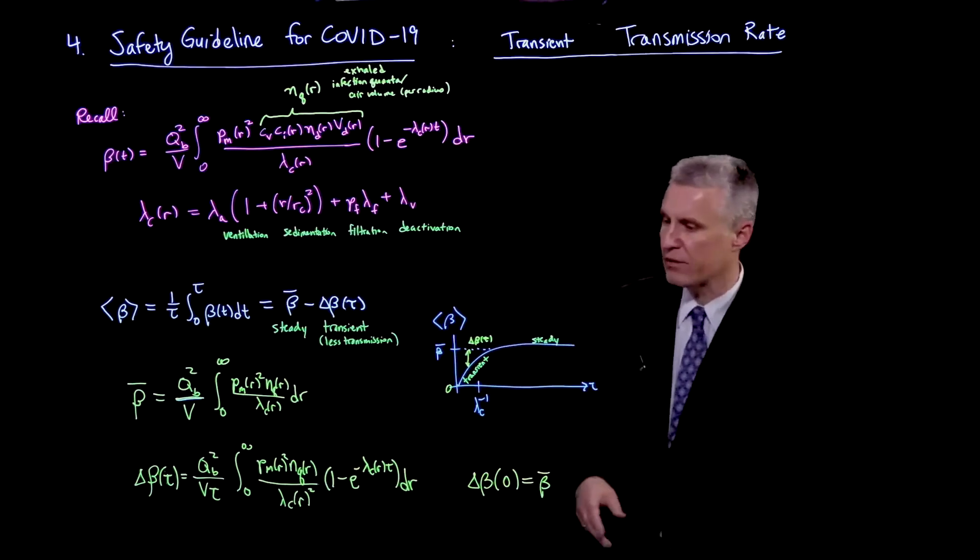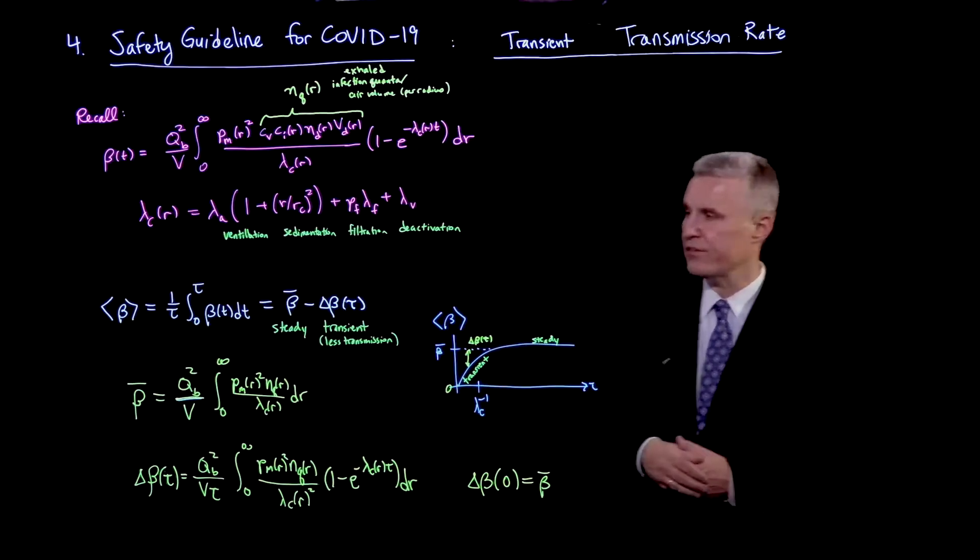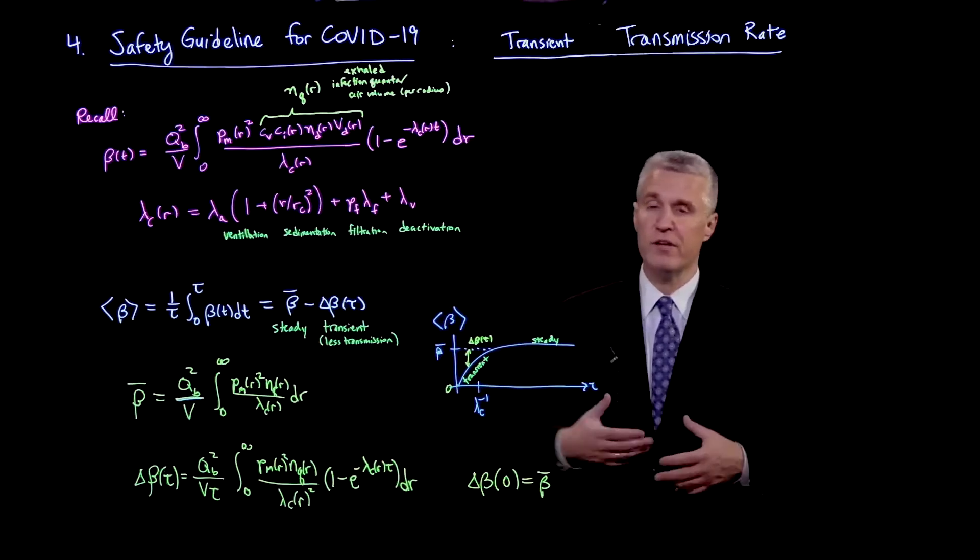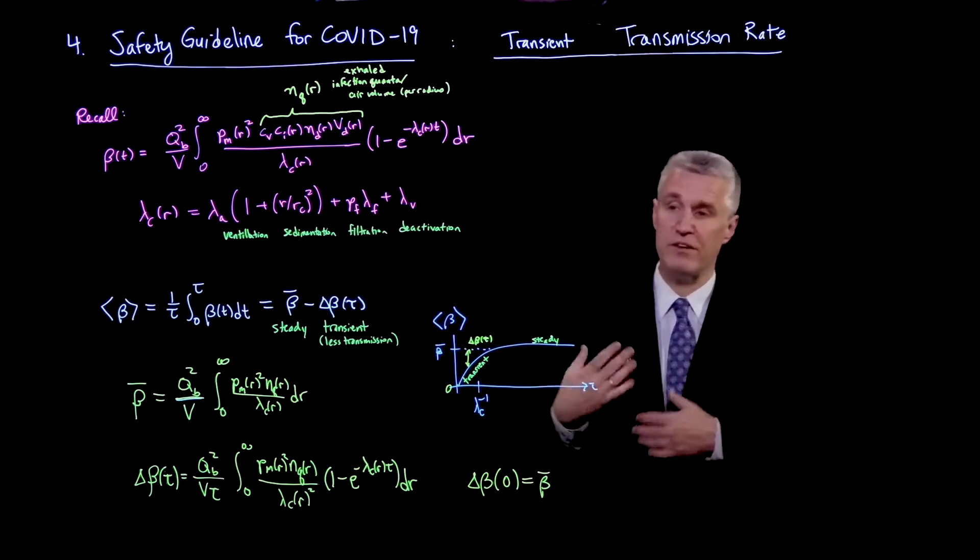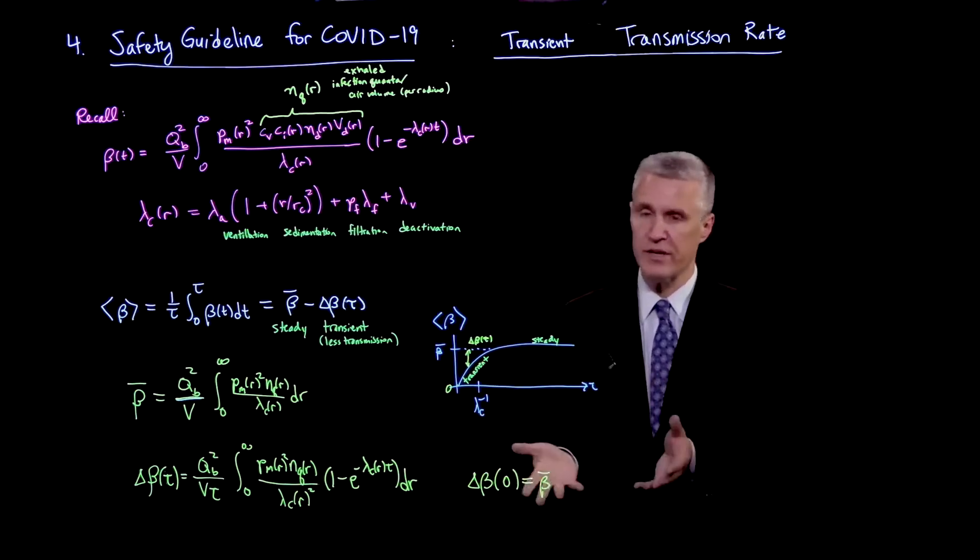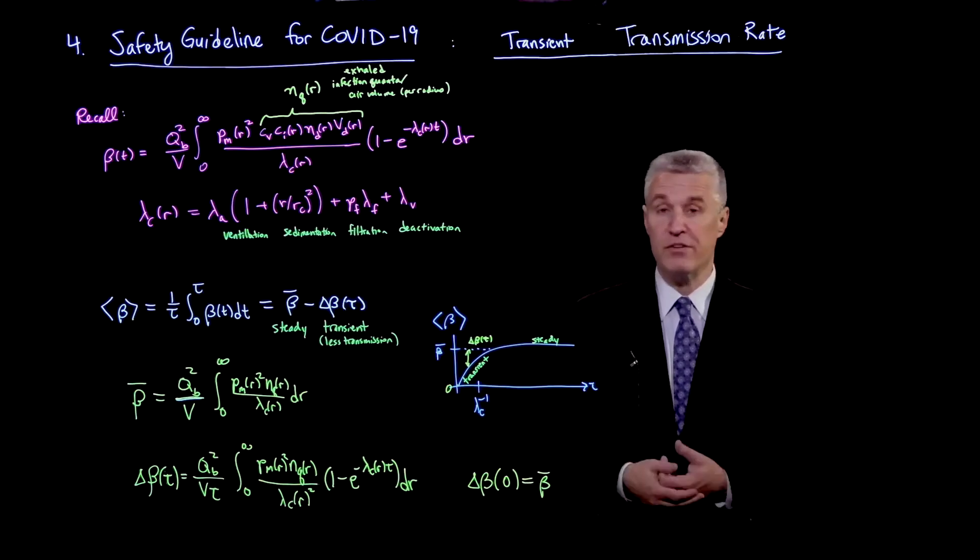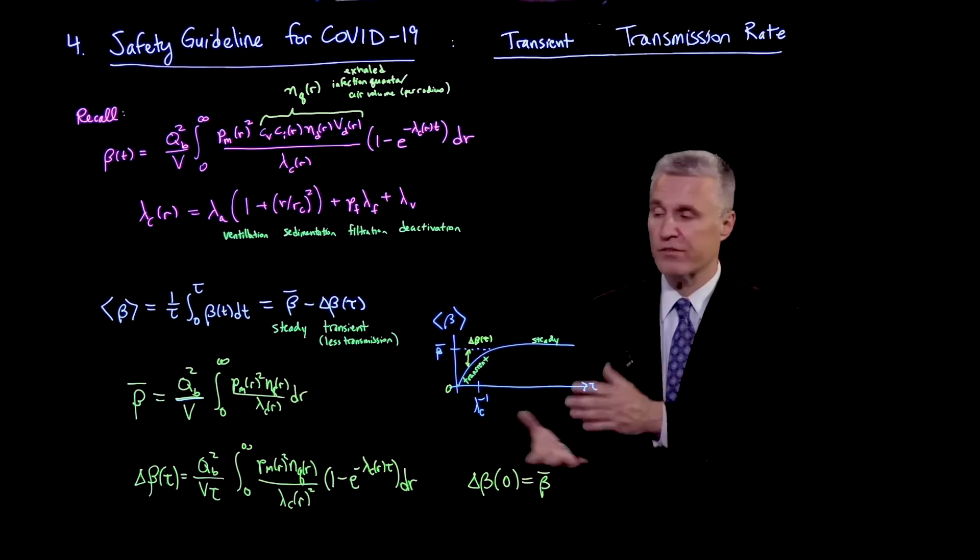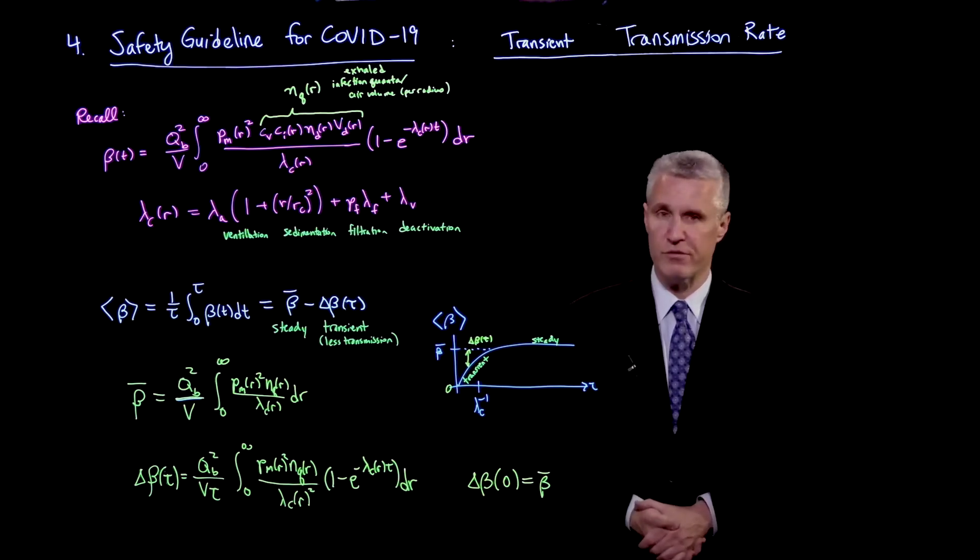So what that means is that the average beta, which we're plotting here, as a function of the time tau, starts out at 0, it ramps up, and then eventually approaches a steady state. And here's the full solution. So all the information that we've talked about before in terms of filtration, sedimentation, other phenomena in the well-mixed room are all included in this framework. And it can then be put into the safety guideline to derive a general safety guideline that has all of the physics that we want in there and allows you to define a safe occupancy for a room.